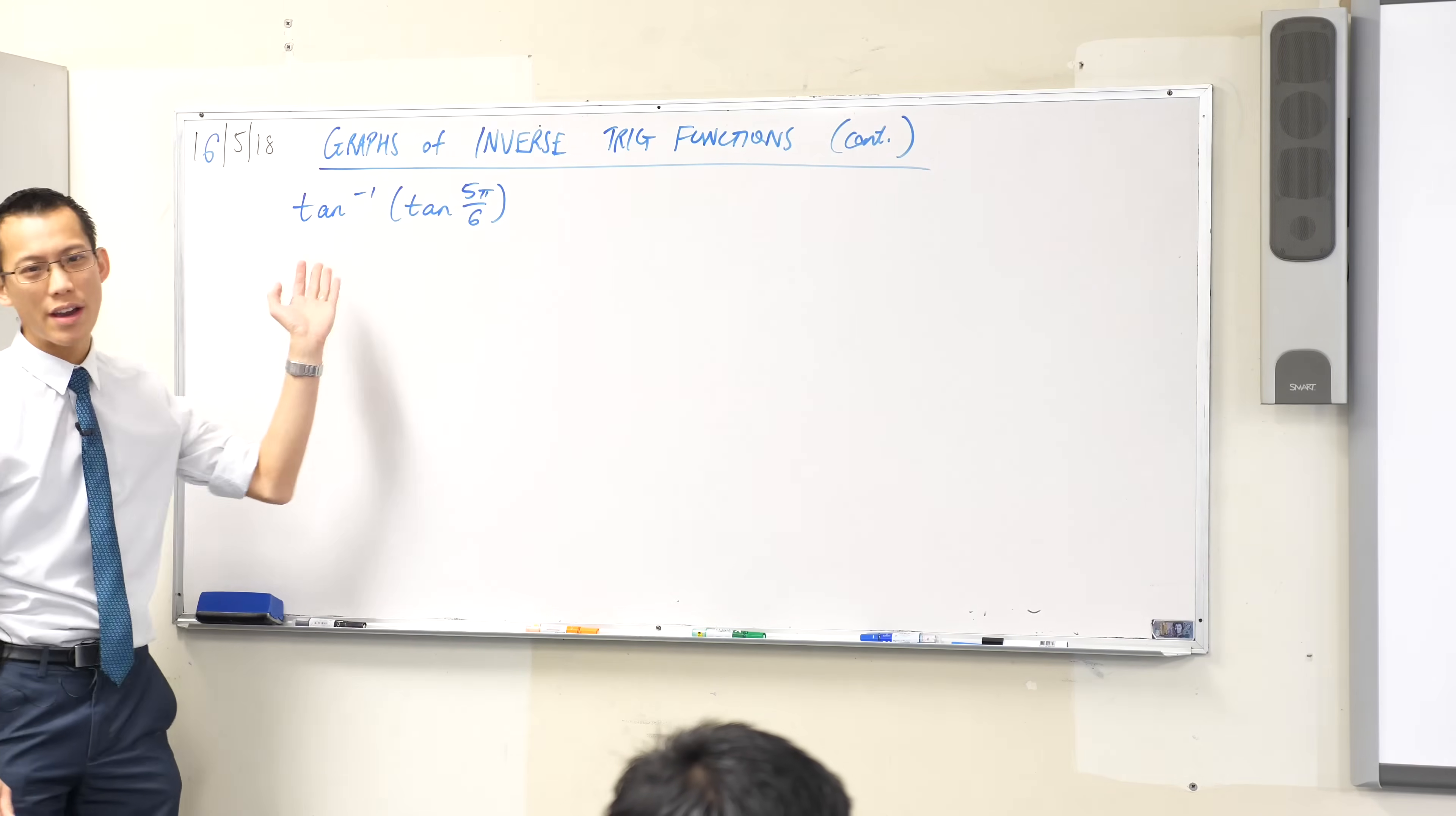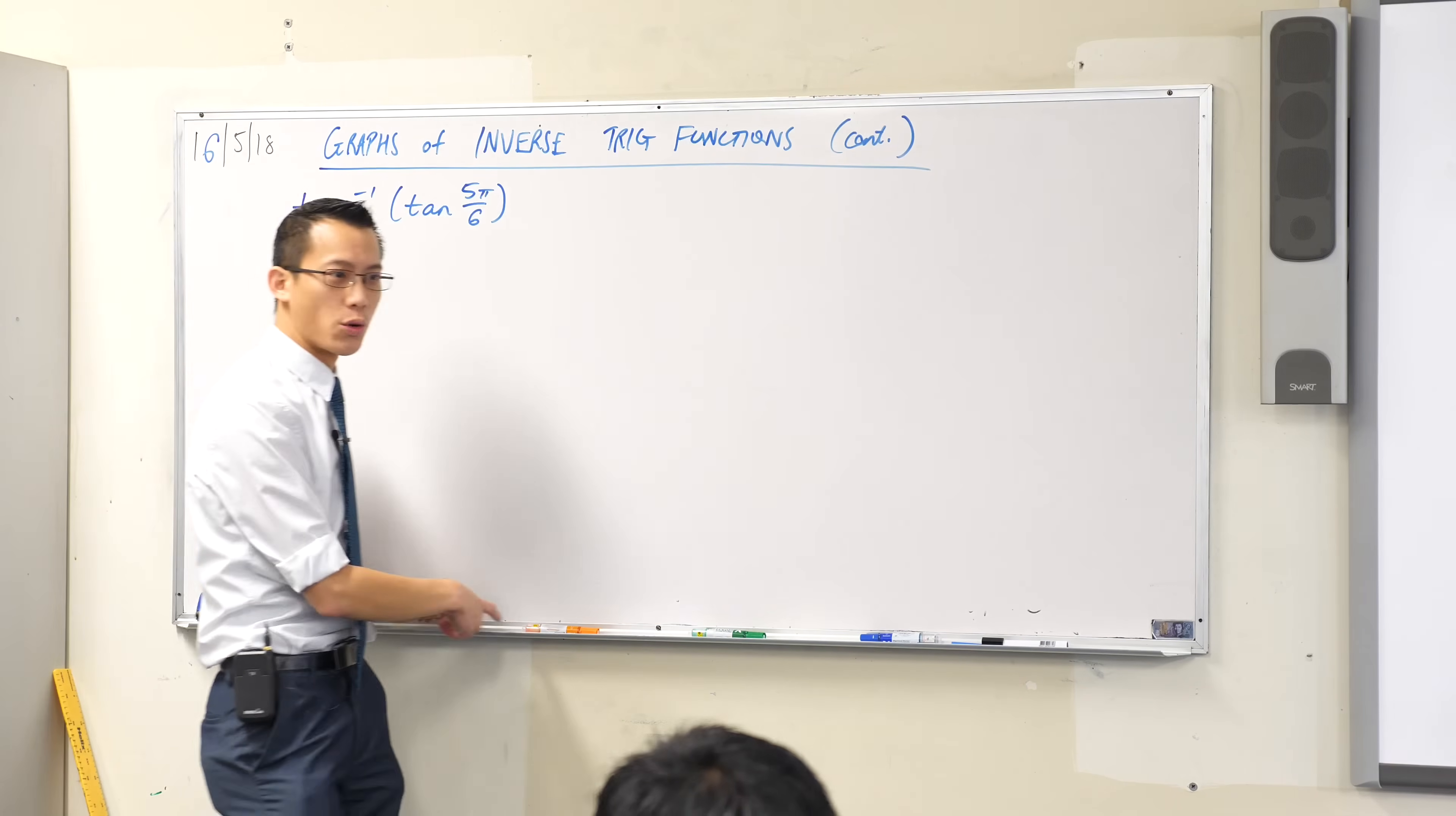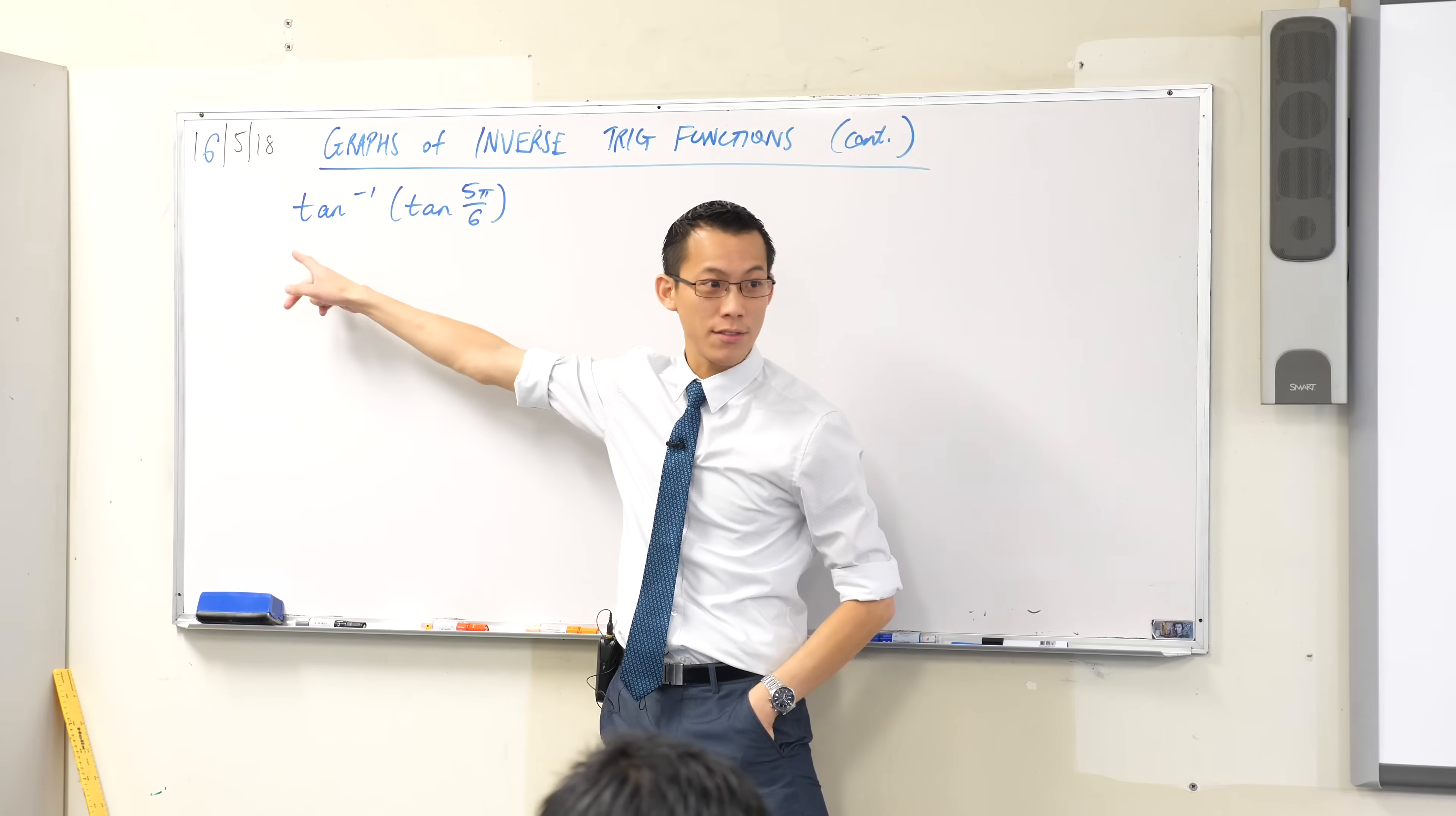What we're doing here is we're just trying to evaluate this expression. You've got a trig function, then you have its inverse trig function, and kind of what we've been talking about when we first introduced this is inverse functions are meant to undo. They're meant to sort of invert, hence inverse, whatever operation is the inverse function.